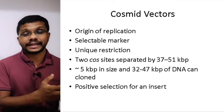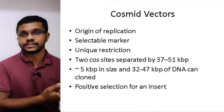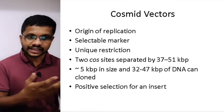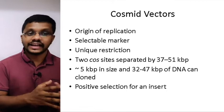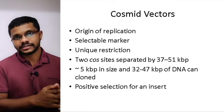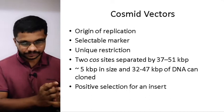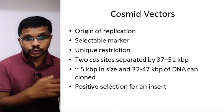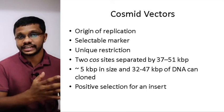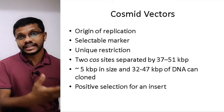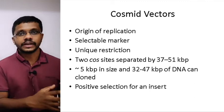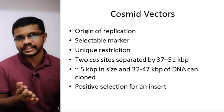The features of cosmid vectors: they have an origin of replication from the plasmid — most commonly the ColE1 origin of replication seen in pBR322 and pUC. They have selectable markers, a unique restriction site, and two cos sites separated by 37 to 51 kilobase pairs. That size range is the limitation for in vitro packaging. The total size of the cosmid is about 5 kilobase pairs, so we can insert 32 to 47 kilobase pairs of DNA into the vector, which is very beneficial.